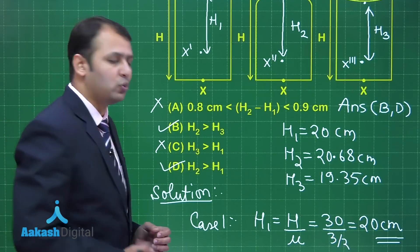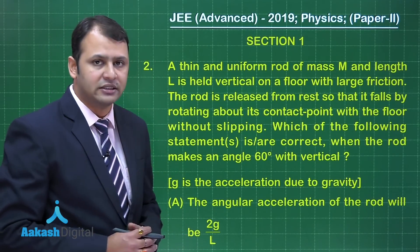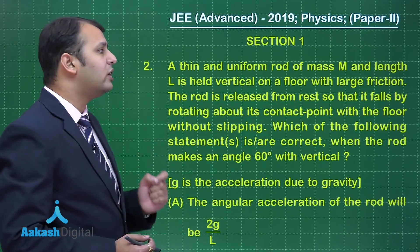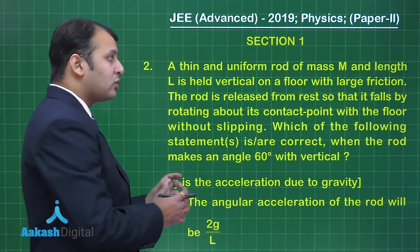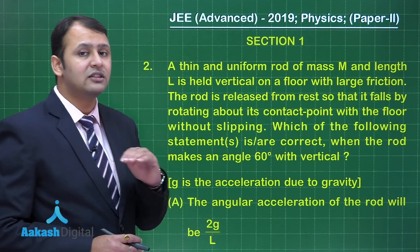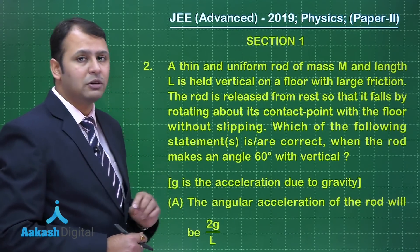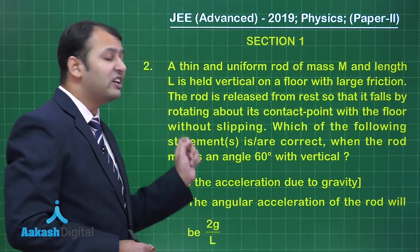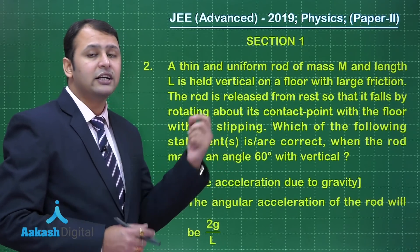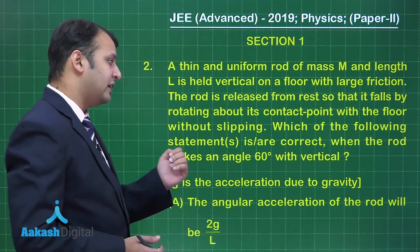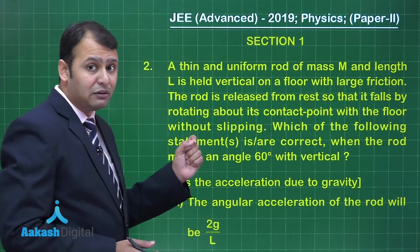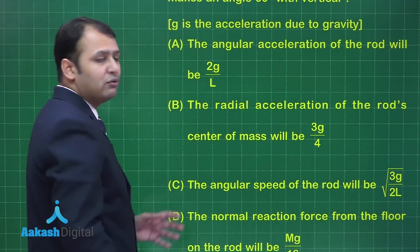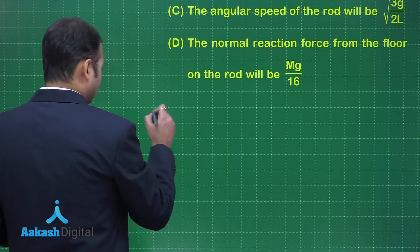Moving on to question number two, which belongs to the chapter System of Particles — Rotational Motion. A thin and uniform rod of mass M and length L is held vertical on a floor with large friction. Similar questions have appeared in JEE but with a smooth floor; here the large friction is the notable point. The rod is released from rest and falls by rotating about its contact point with the floor without slipping — meaning the contact point behaves as a hinge. We need to find which statements are correct when the rod makes an angle of 60° with the vertical.